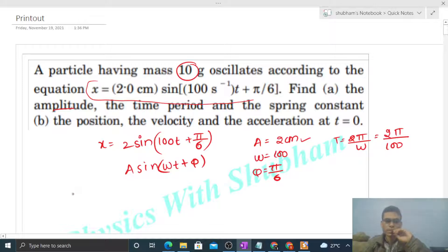Spring constant k is equal to m times omega squared for SHM. So k will be m times ω². m is given as 10 grams which is 1/100 kilogram, omega squared is 10⁴, so k equals 10⁴ N/m.